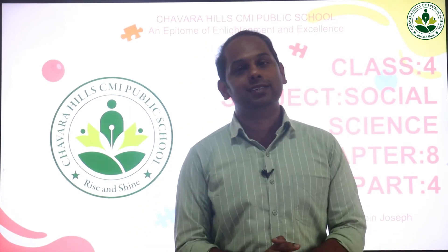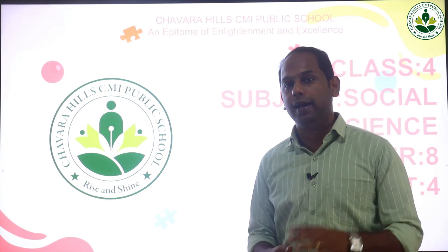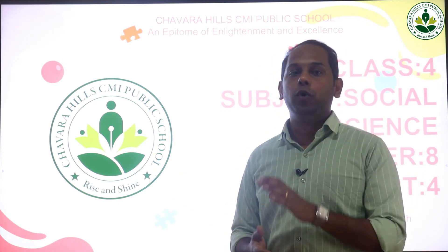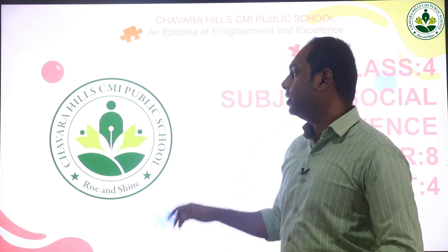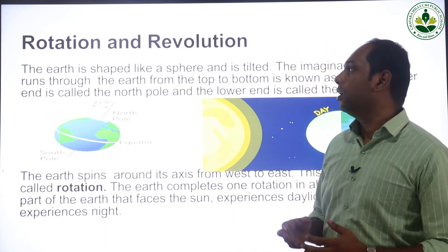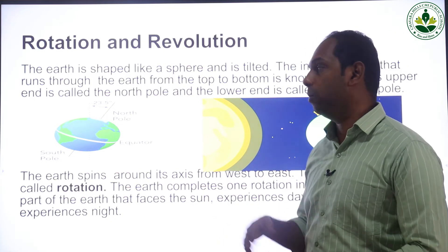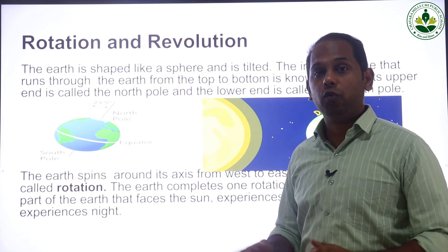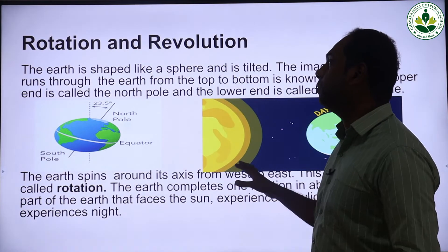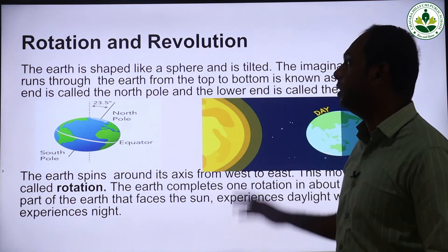Welcome to Source Science class. Today we'll be continuing the eighth lesson, 'Magical Universe.' In the last class we studied planets and celestial objects like asteroids, comets, and meteoroids. Today we'll be studying the difference between rotation and revolution — the different movements of the earth.